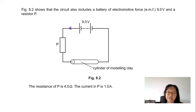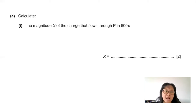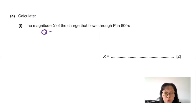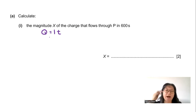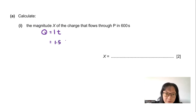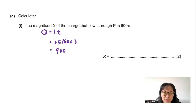Part A: Calculate the charge X that flows through P in 600 seconds. Using Q = It: Q = 1.5 × 600 = 900 coulombs. The unit of charge is coulombs.